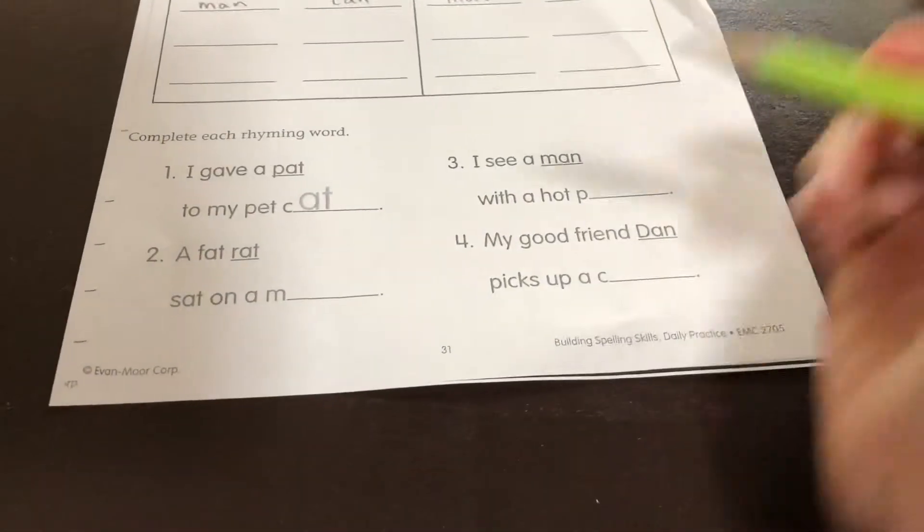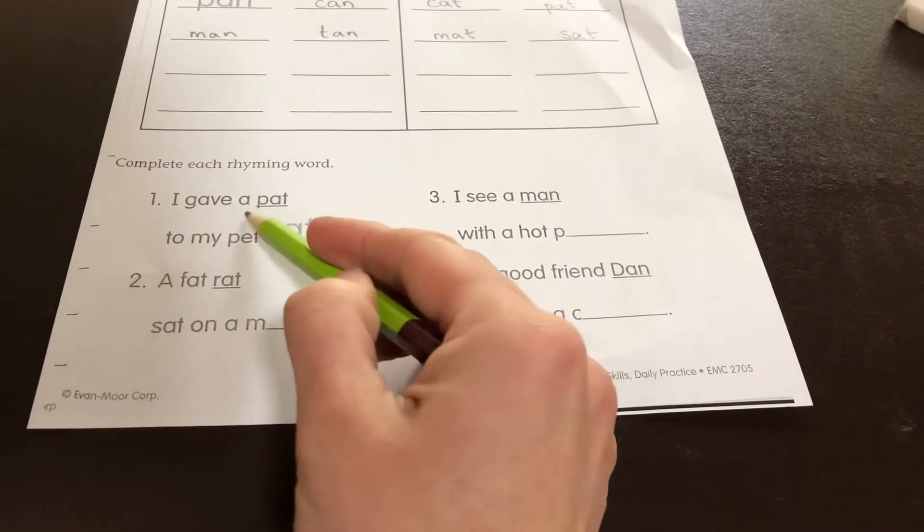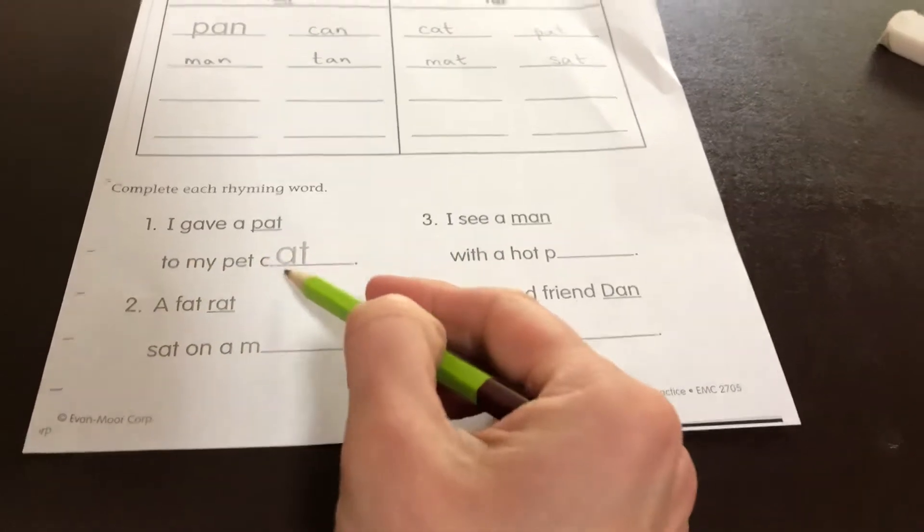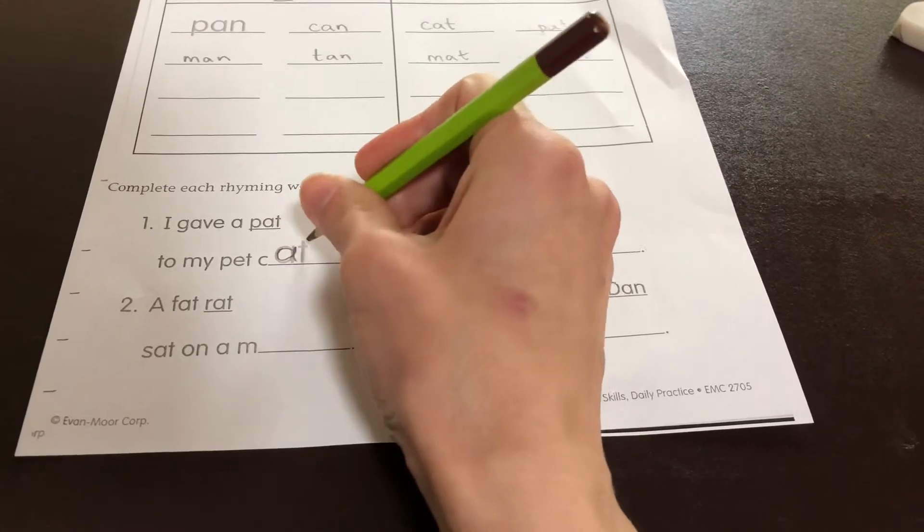Alright. Let me fix my paper. Number one. It says complete each rhyming word. I gave a pat to my pet cat. And please trace the letters for this one.